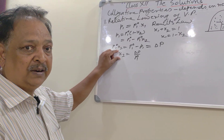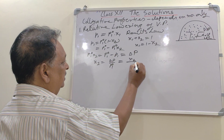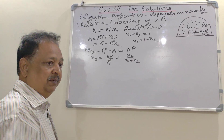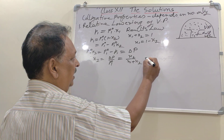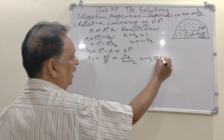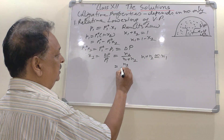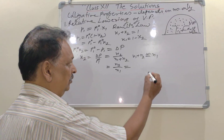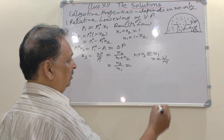So X2 is the mole fraction of the solute, equal to N2 upon (N1 plus N2). If N2 is very very small — that is, the solution is very dilute — then N1 plus N2 is approximately equal to N1. So X2 approximately equals N2 upon N1. The number of moles equals mass of solute divided by molecular weight of solute.